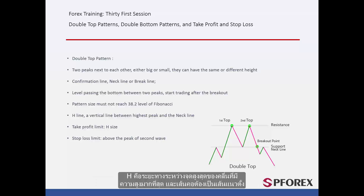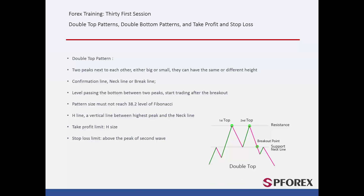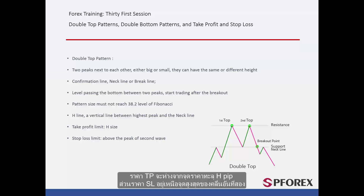H is the distance between the peak of the most elevated wave and the neckline, which must be a vertical line. TP price would be H pips away from the breakout point, while SL price is above the peak of the second wave.